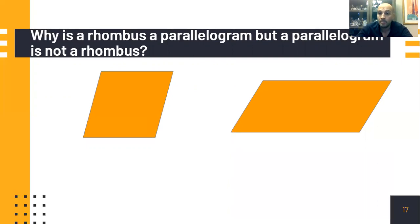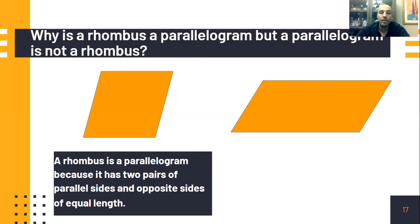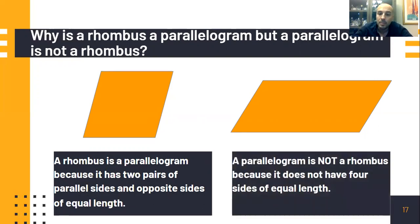Why is a rhombus a parallelogram, but a parallelogram is not a rhombus? Look back to your notes from yesterday and think about the characteristics of both shapes. A rhombus is a parallelogram because it has two pairs of parallel sides and opposite sides of equal length — both characteristics of a parallelogram. However, a parallelogram is not a rhombus because a parallelogram does not have four sides of equal length like a rhombus does.